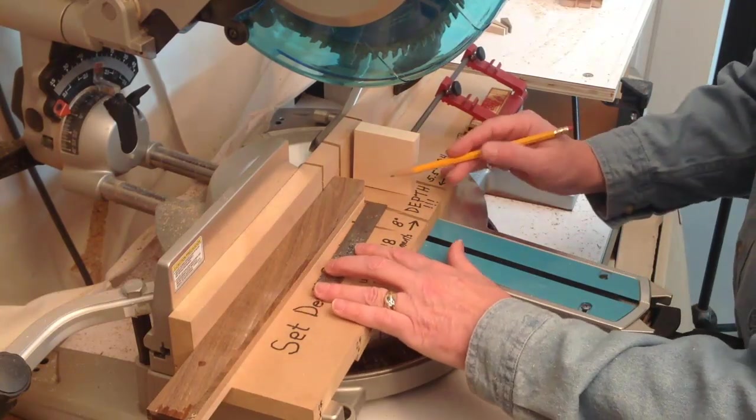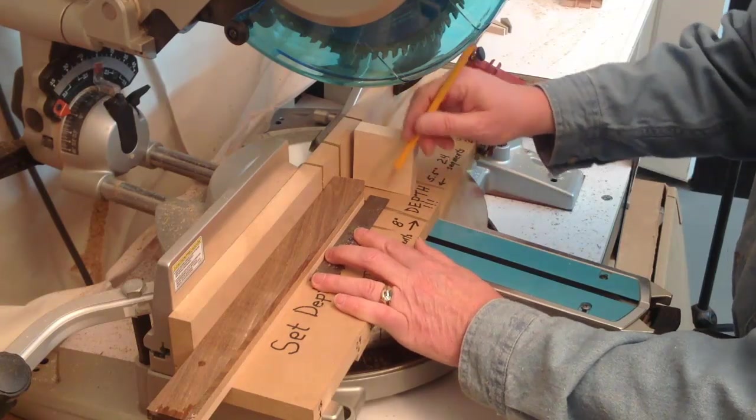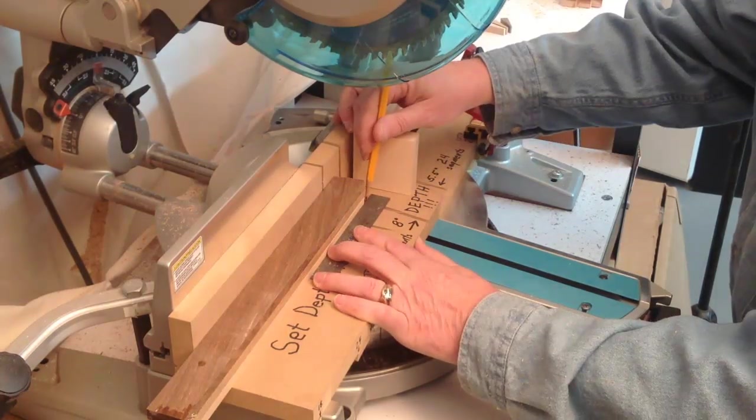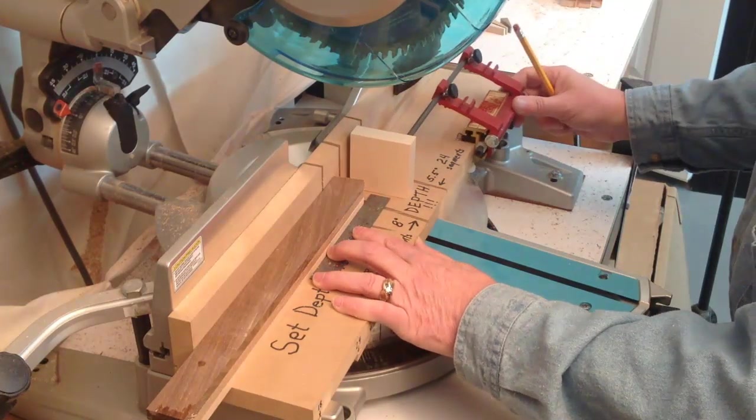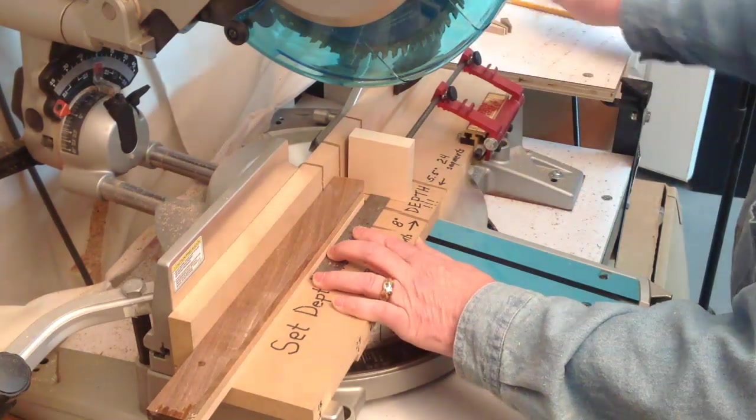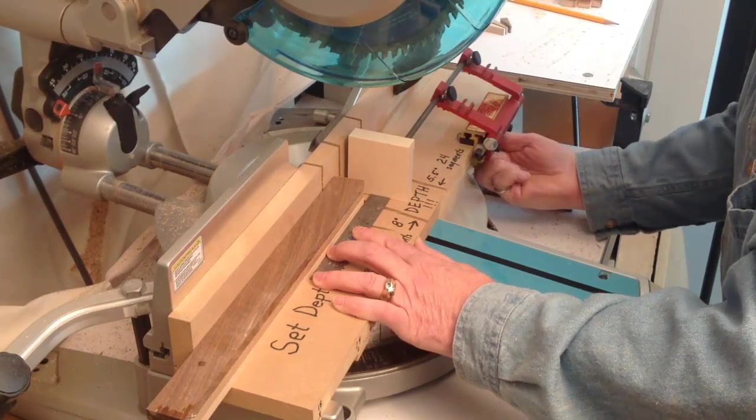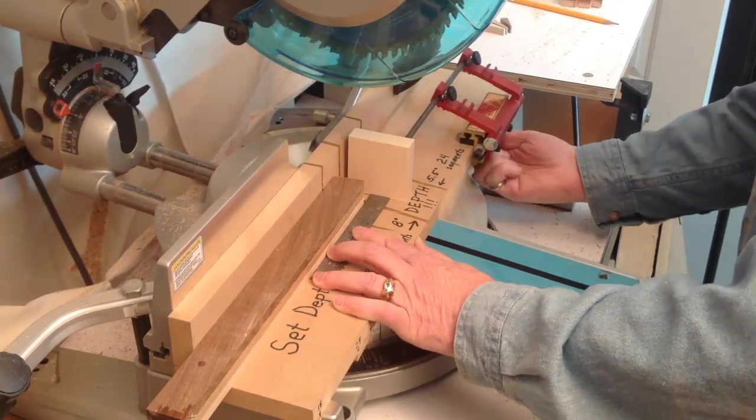And I'm first going to start with the end of this board out of the way of the saw curve. So that when I put the saw curve down, I'm going to measure from the right-hand side of the curve, and then I'm going to move the stop into place, and then I'm going to lock it down, and make sure you do that securely so it doesn't move.